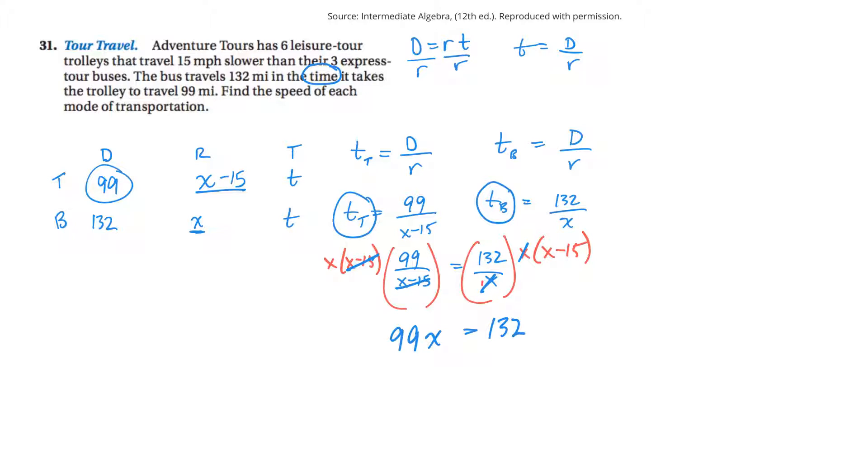And I'm left with 132x minus... I can't do that one in my head. Whatever 132 times 15 is. Okay, and once I've got this figured out, then I want to get my x's together. So on this side, I think it would be 31x. Is that right? 33x? 33x. And 132 times 15.